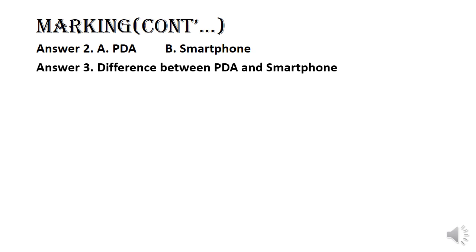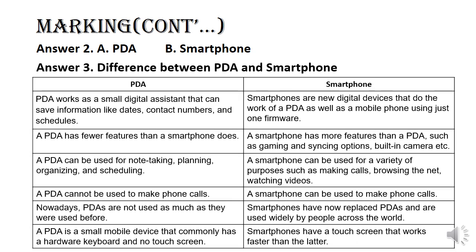Answer to question number three: the difference between a PDA and a smartphone is shown using the table below. We have many characteristics for a PDA and the smartphone summarized in the following table. A PDA works as a small digital assistant that can save information like dates, contact numbers, and schedules.